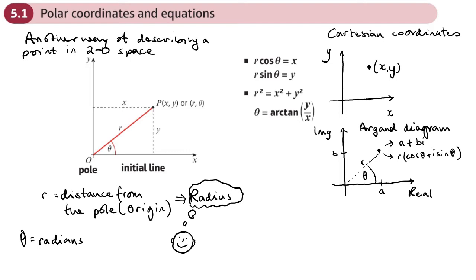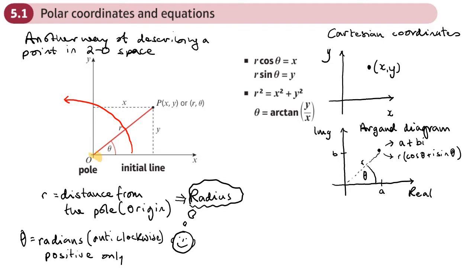The angle theta is only measured in the anti-clockwise direction, so it's always going to be positive. When we measure an angle, we go round from the initial line — the x-axis is called the initial line — and theta is measured from the initial line.